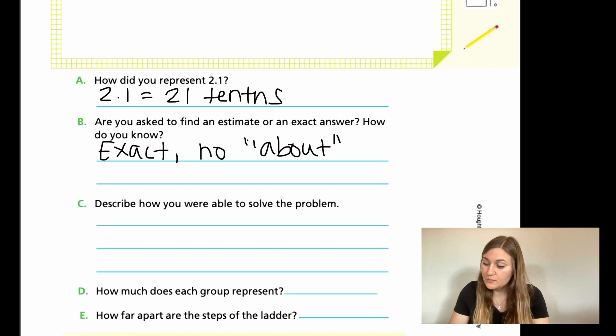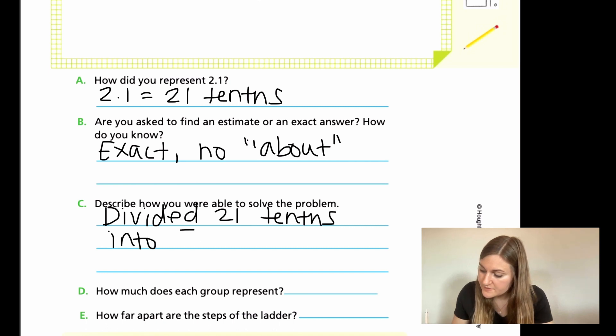For C, it says, describe how you were able to solve the problem. So I divided my 21 tenths into seven groups. So how much does each group represent? Well, I gave them three, so that's going to be 3 tenths.